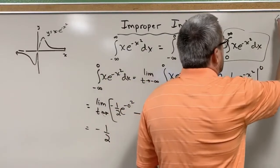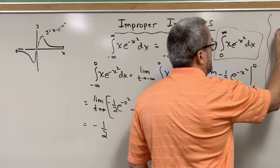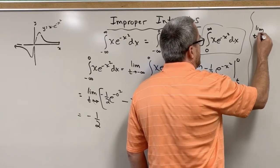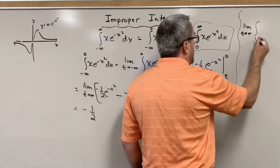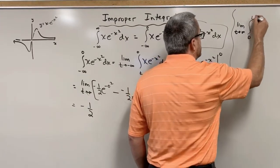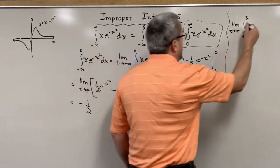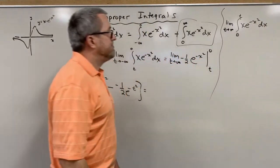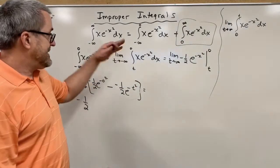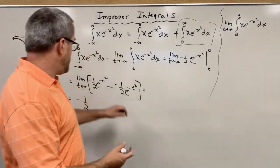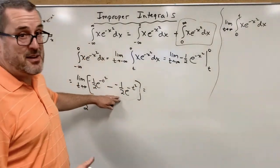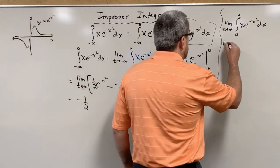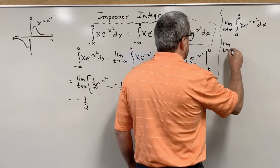Let's just double check. Using good mathematical notation again, we take the limit as t goes to infinity of the integral from zero to t of x·e to the negative x squared dx. The integration process is the same as before — it's the limiting process and the fundamental theorem evaluation that will be different. So let's jump to that result.